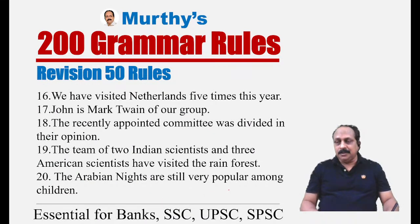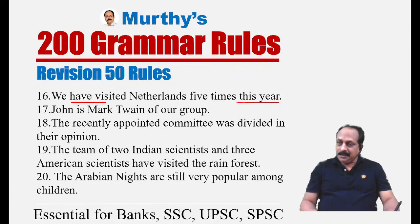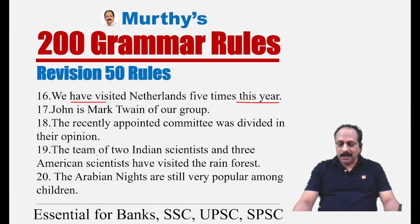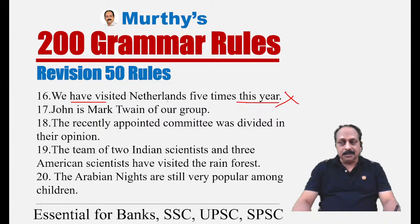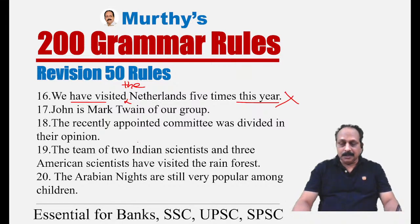Sentence seventeen: 'John is Mark Twain of a group.' There are two proper nouns — John and Mark Twain. But 'Mark Twain' has been used as a common noun here. When we use a proper noun as a common noun, we must use the definite article 'the.' The correct sentence is: 'John is the Mark Twain of a group.' Examples: the GB Shaw, the Mark Twain. The article 'the' has more than 40 rules.